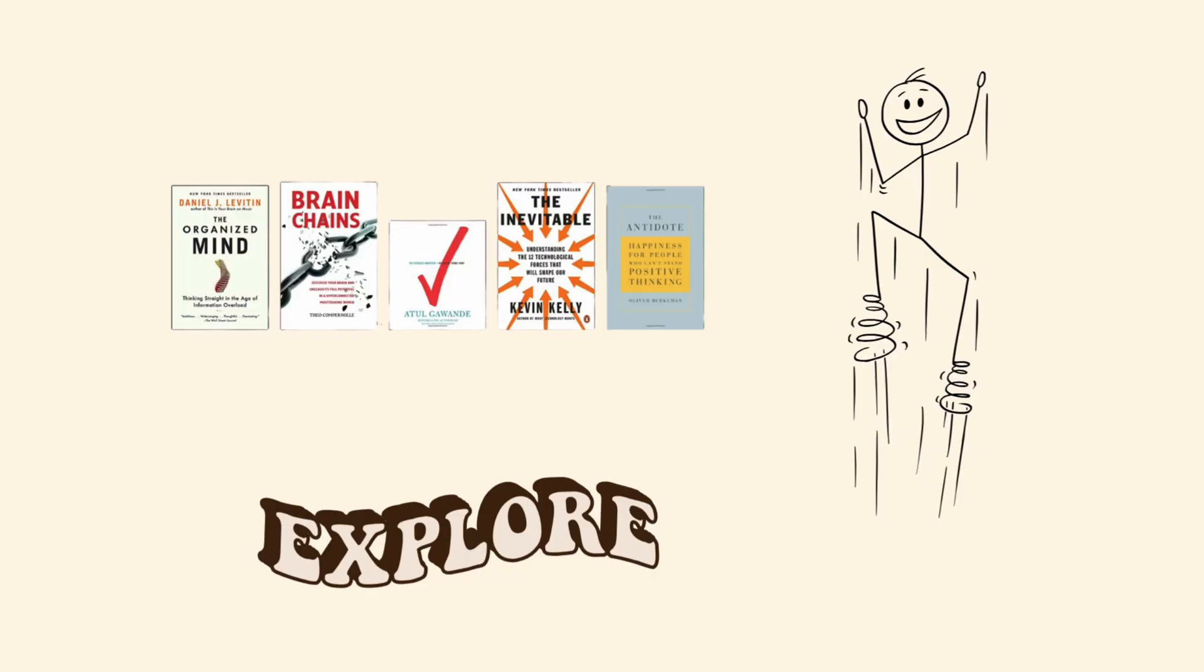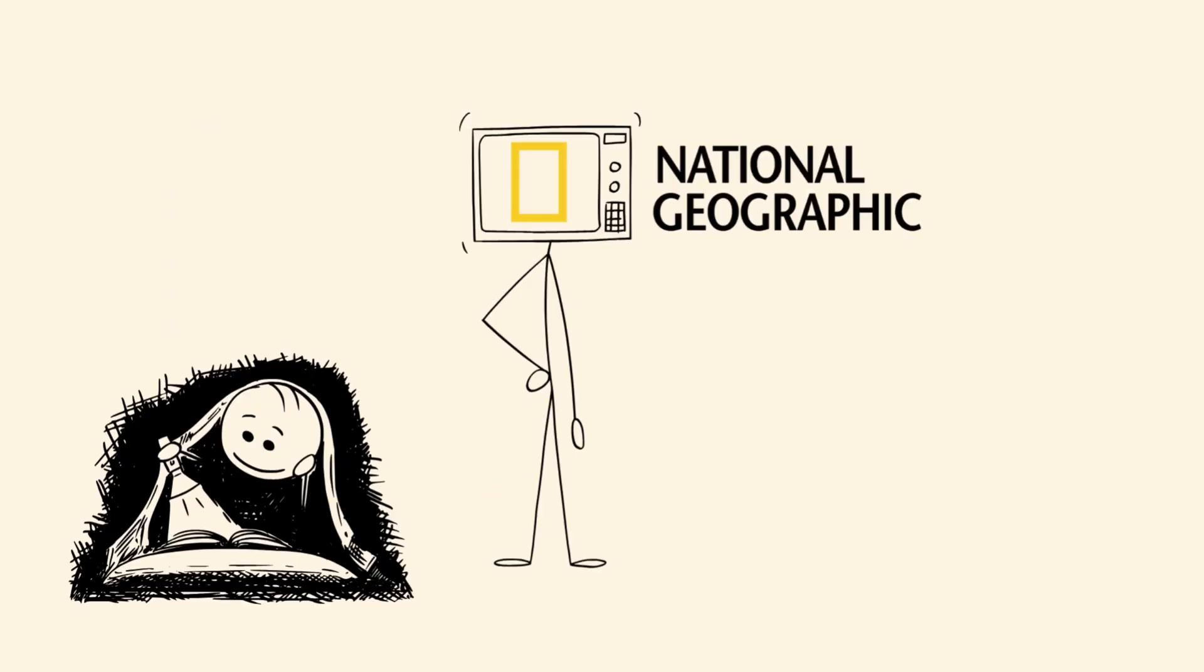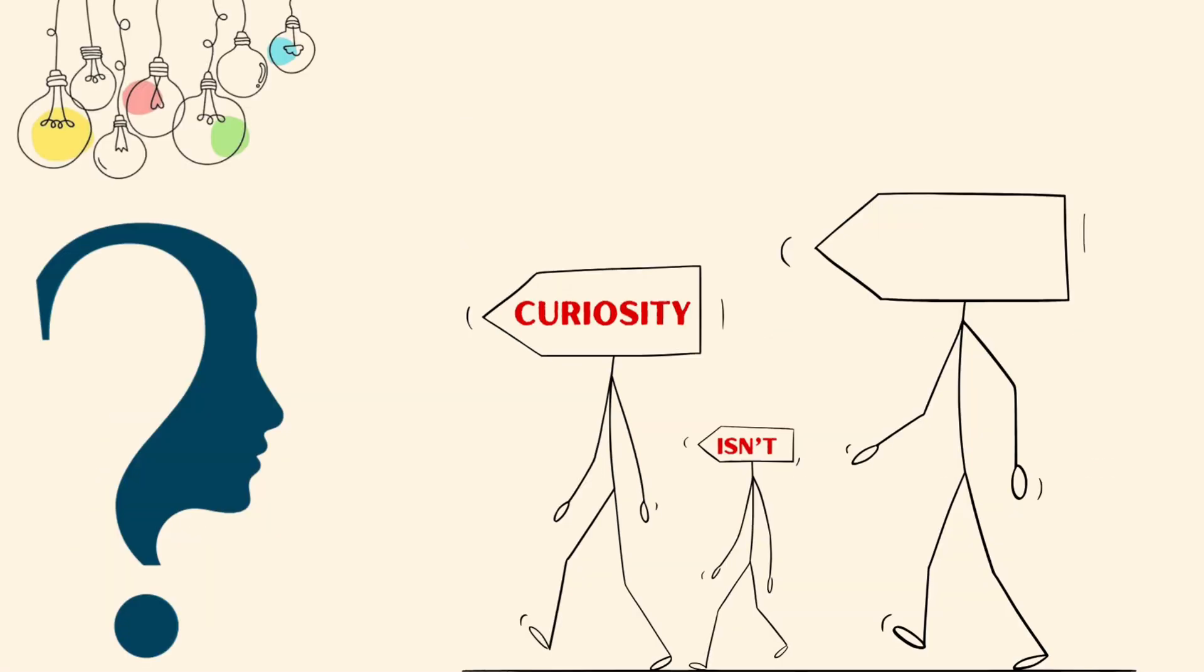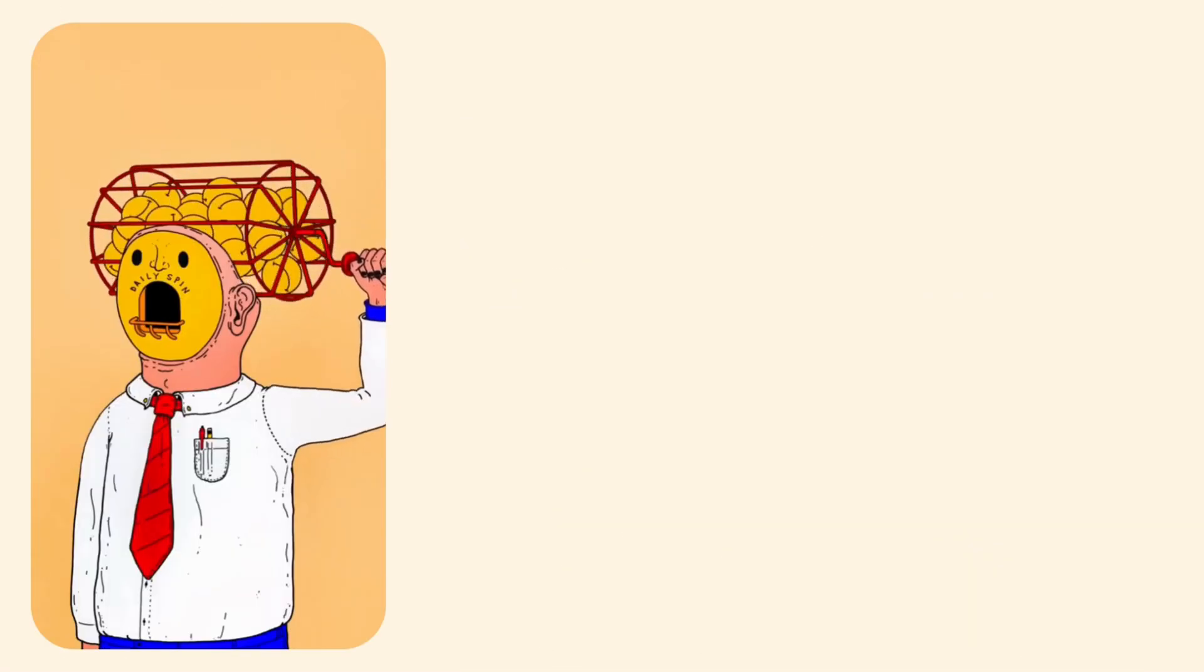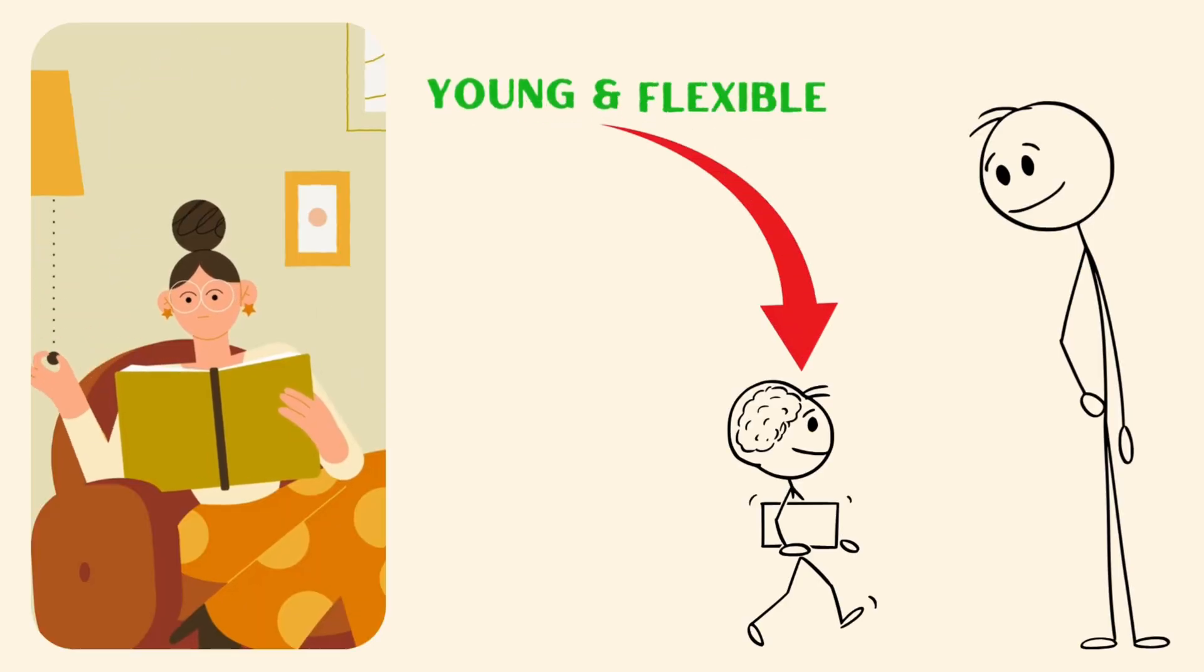Not productivity books. Not how to get rich hacks. He reads, watches documentaries, or deep dives into topics he's genuinely curious about. Curiosity isn't random. It activates the brain's reward system, makes learning stickier, and keeps the mind young and flexible.